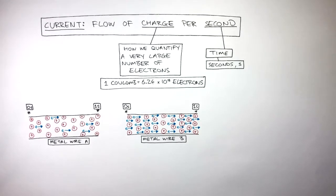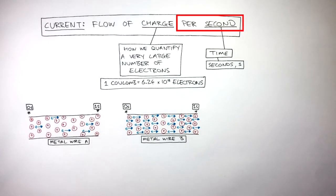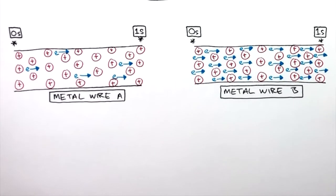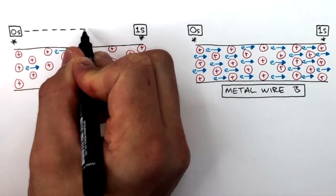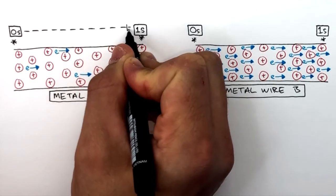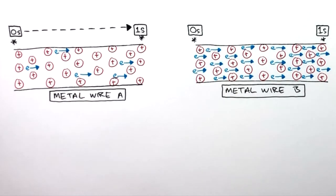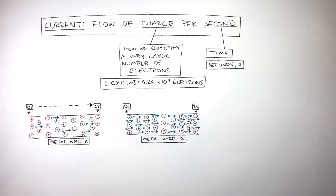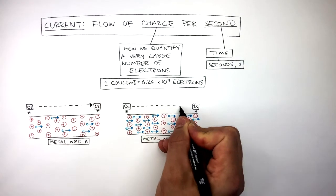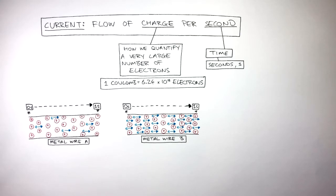So current isn't just the flow of charge, it's the flow of charge per second. We can see on metal wire A how in one second, from zero seconds to one second, there is a smaller flow of charge per second, whereas in metal wire B, in one second, there is a bigger flow of charge as there are more electrons flowing.